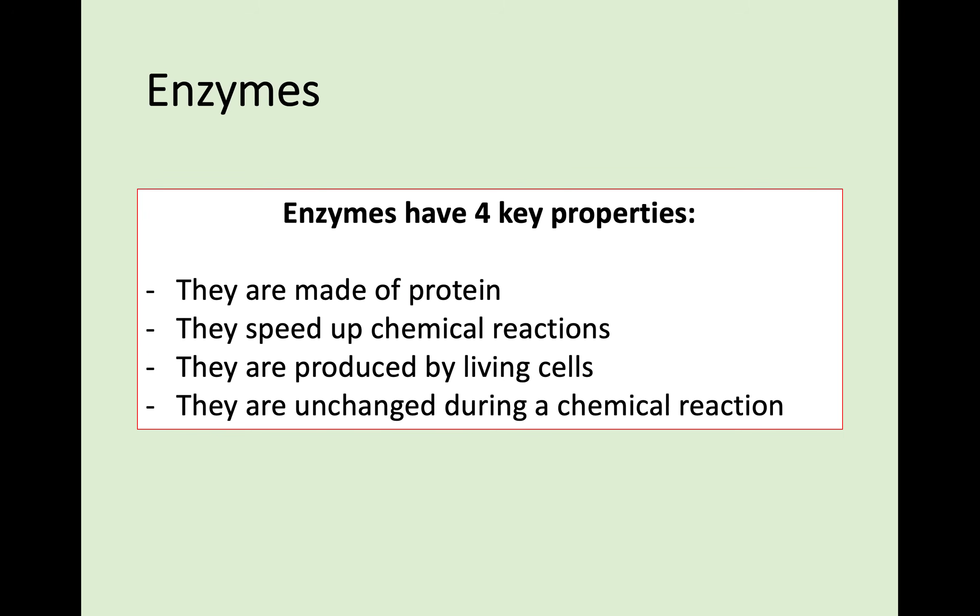Enzymes have four principal properties. First, as you should already know, they're made up of protein — they are one of the groups of proteins. Second, they speed up chemical reactions, and they're produced by living cells. Third, and also important, enzymes are unchanged during a chemical reaction. They are not disposable; they do not speed up a reaction and then get destroyed or consumed. They are unchanged by it. We're going to look at the structure of enzymes, how they work, and how they can speed up things depending on conditions.